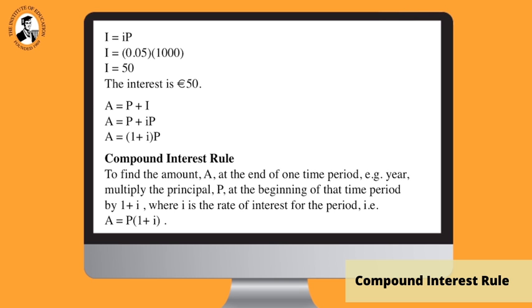This gives the very important compound interest rule. To find the amount A at the end of one time period, for example a year, multiply the principal P at the beginning of that time period by 1 plus I, where I is the rate of interest for the period. In other words, A is equal to P times 1 plus I. There are a number of ways of calculating interest, but the most important one, and the only one in our course, is called compound interest.